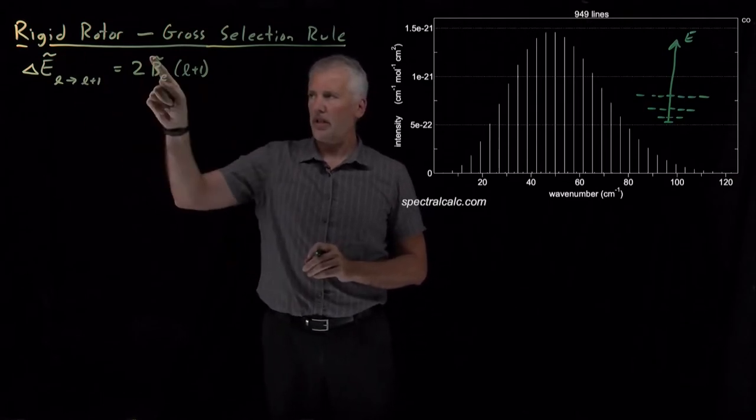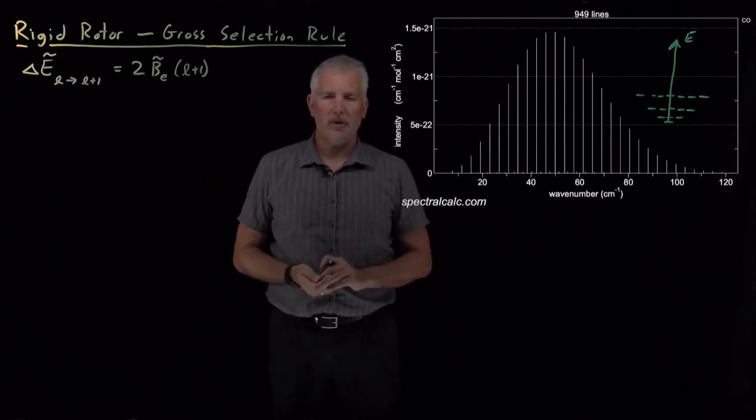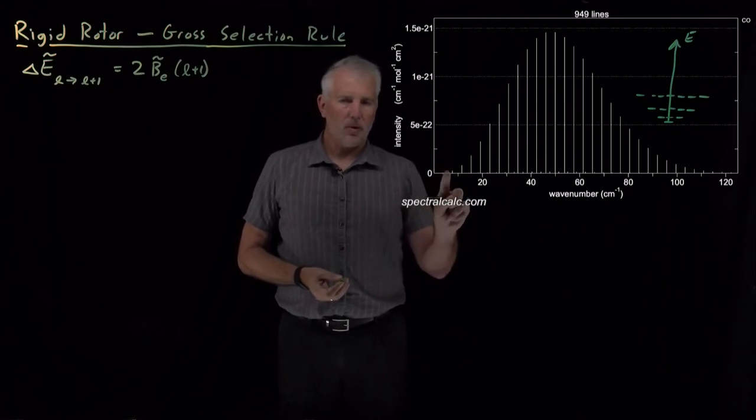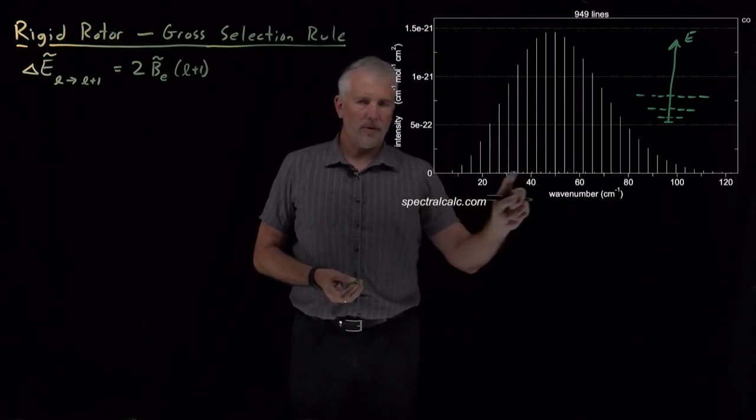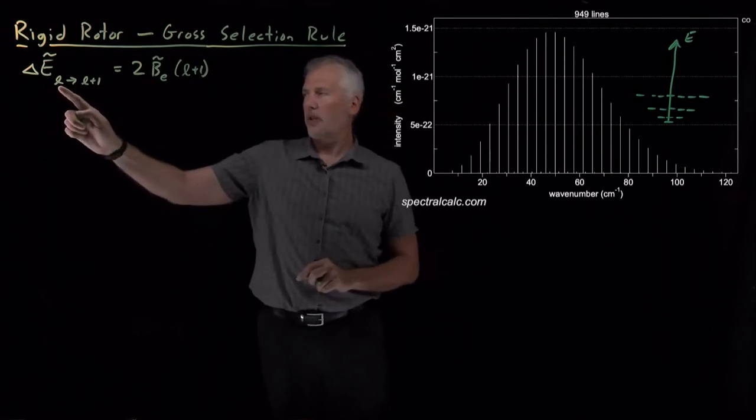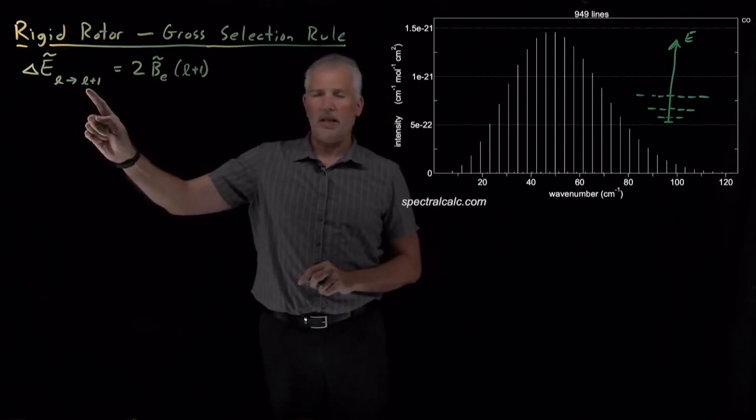The tilde on top means we're doing that in units of wave numbers, and that lets us predict what frequencies of light or what wave numbers of light will be absorbed by that molecule, corresponding to transitions between some state and the next state up.